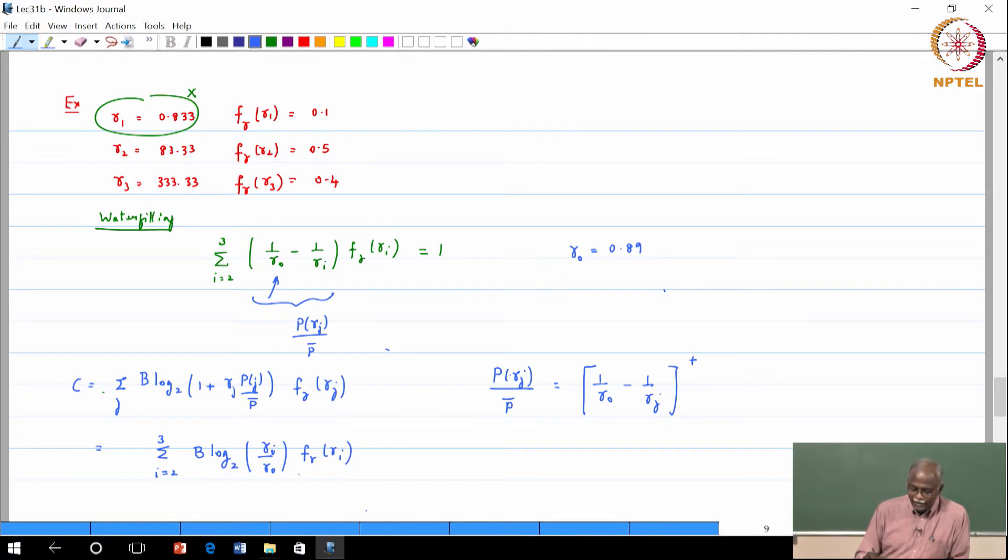So that is the expression that we have for the capacity. Please do substitute the different levels that we have. All of the quantities are known: gamma i is known, gamma not is known, the probabilities are known, the bandwidth is known. You can do the computation.